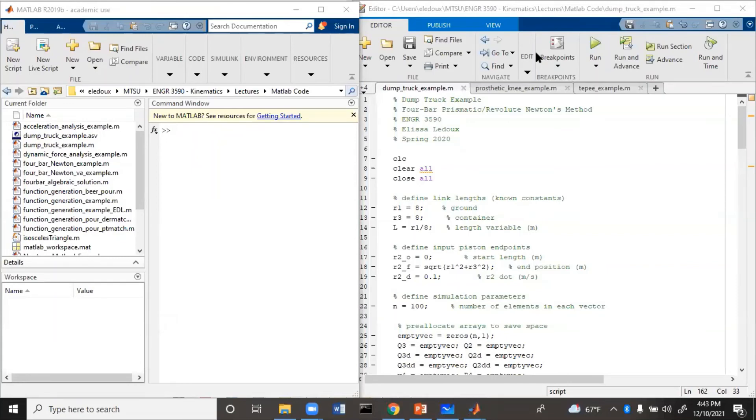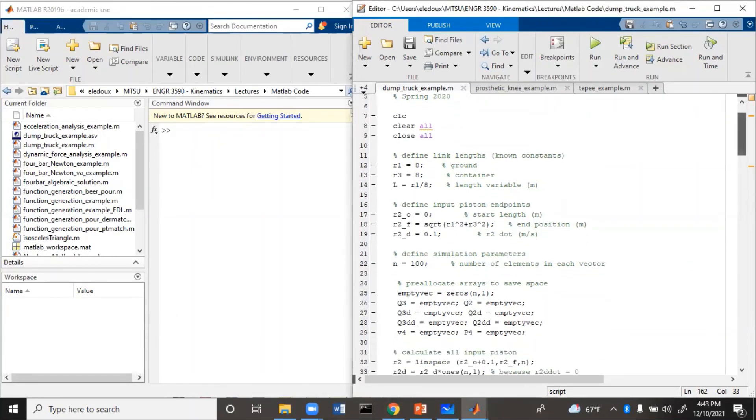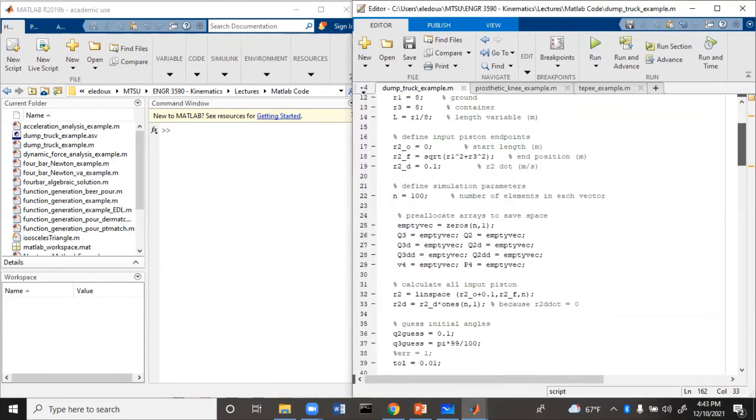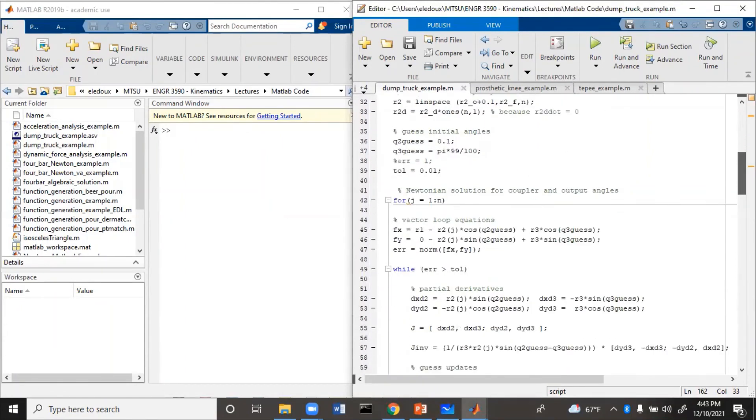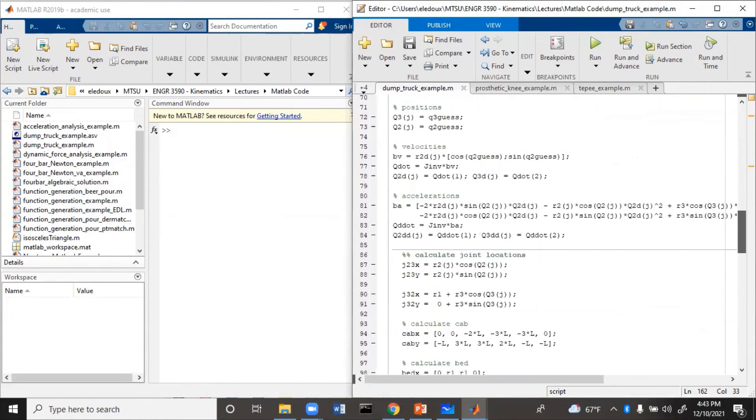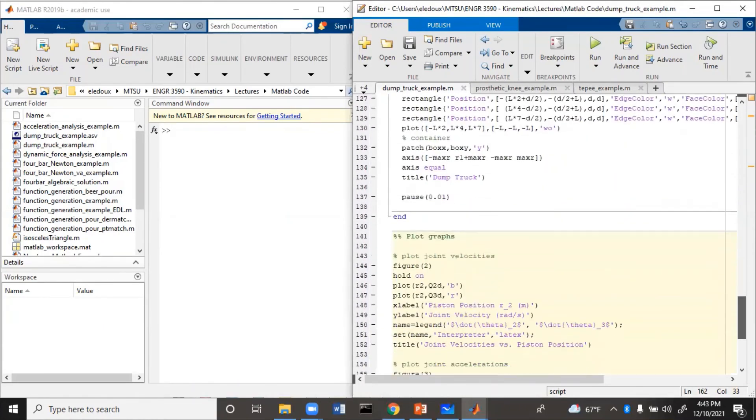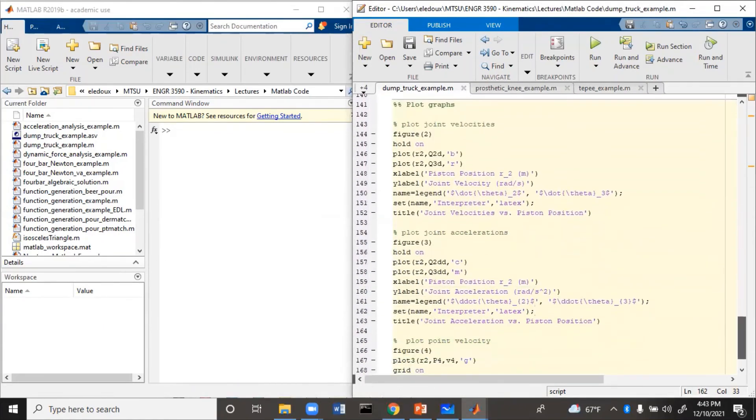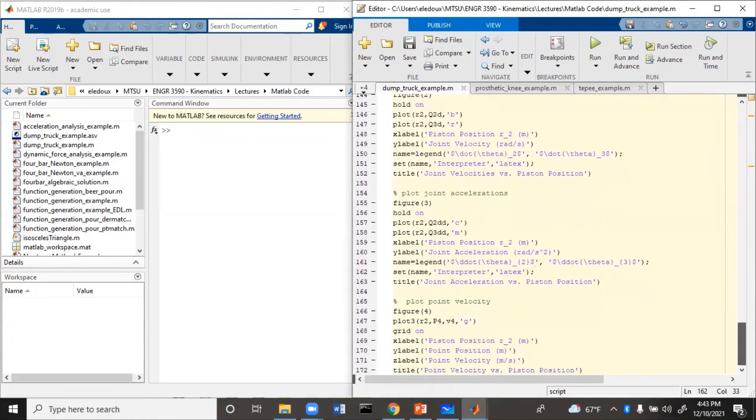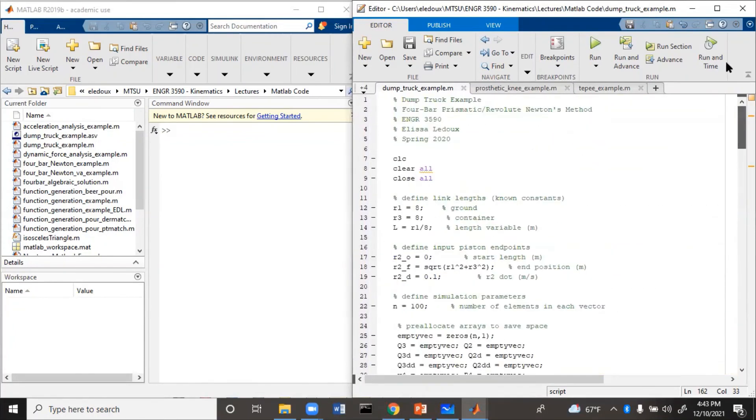Now we're going to look at an example of this in MATLAB. You can see down here, I have put in all of the equations that we worked out and solved it using Newton's method. And then at the end, we're going to plot velocities, accelerations, and the velocity at the point. So let's run.